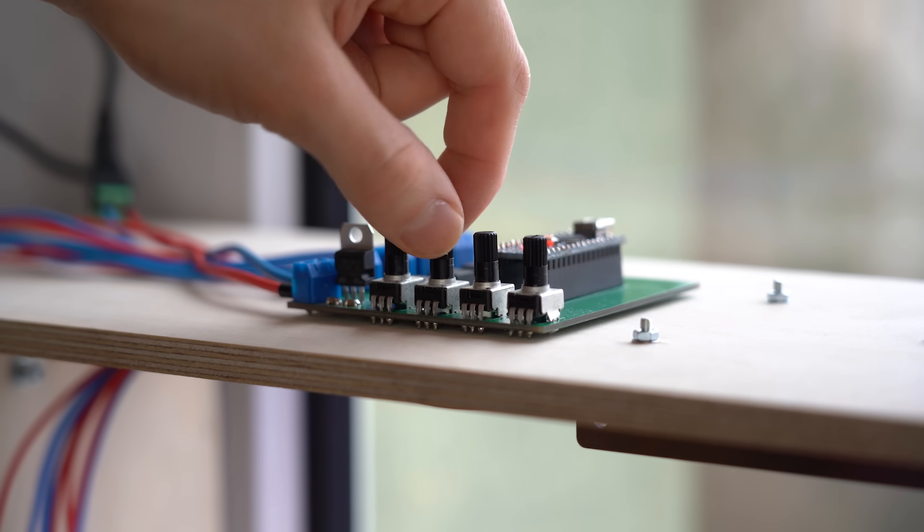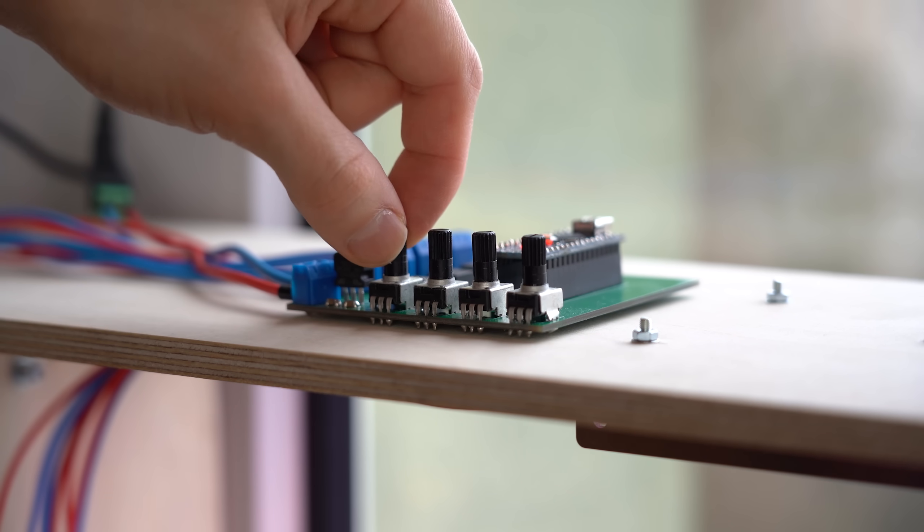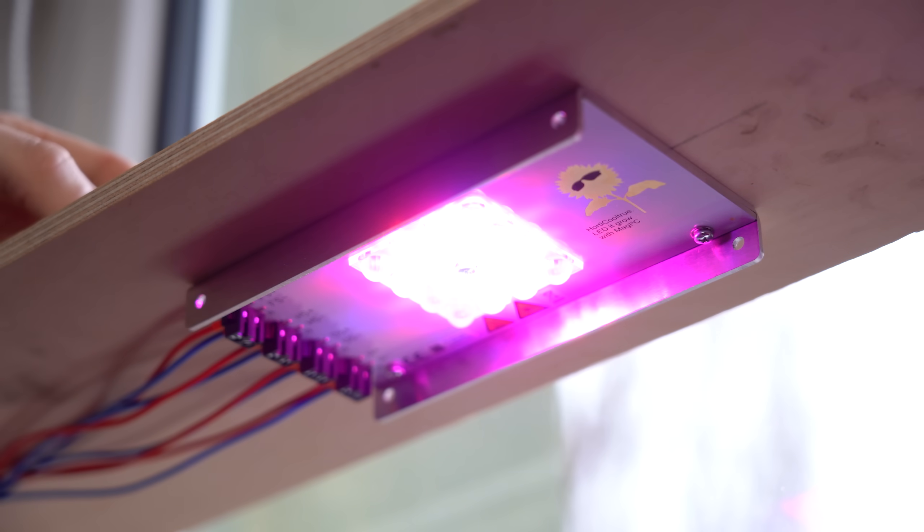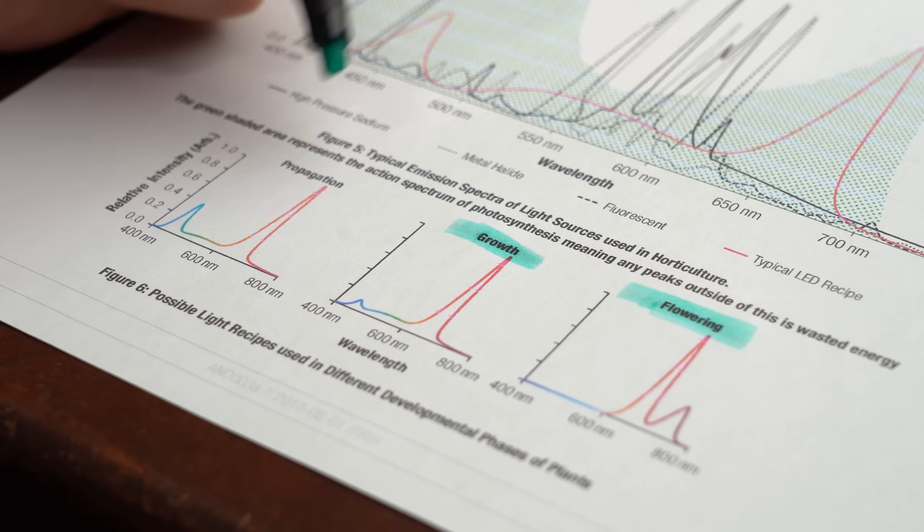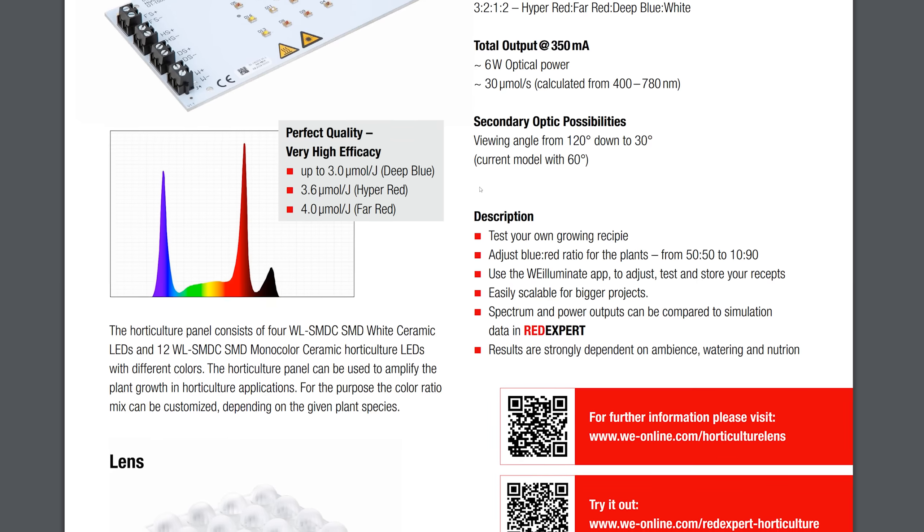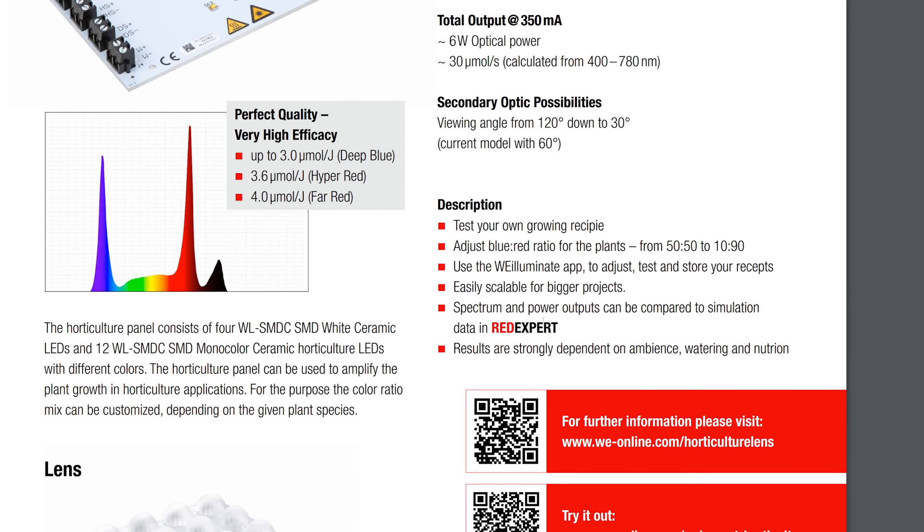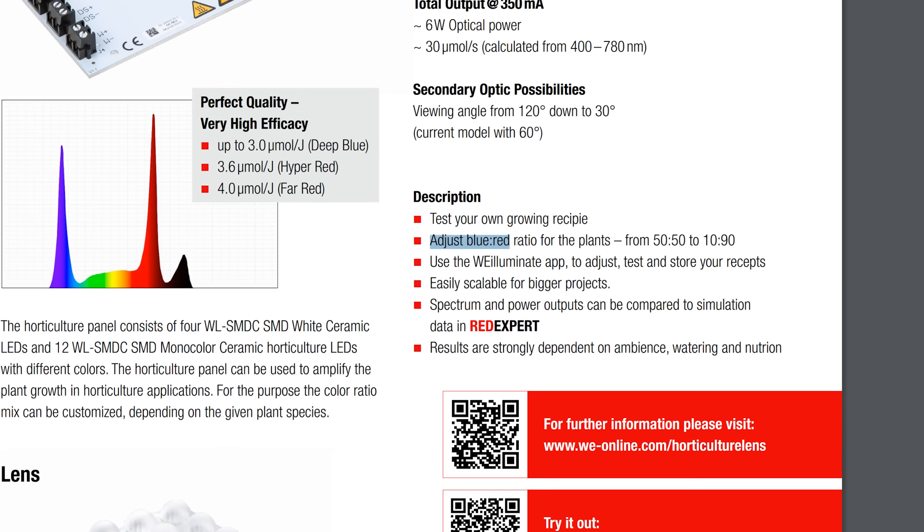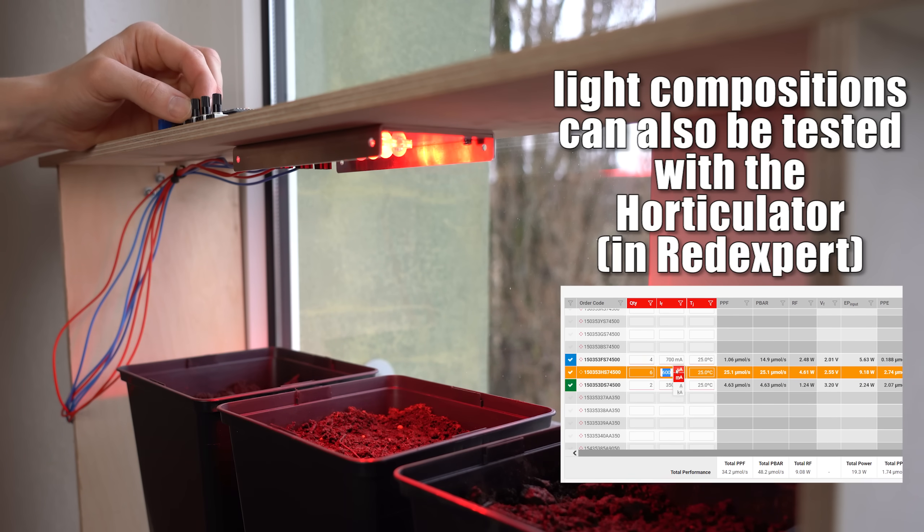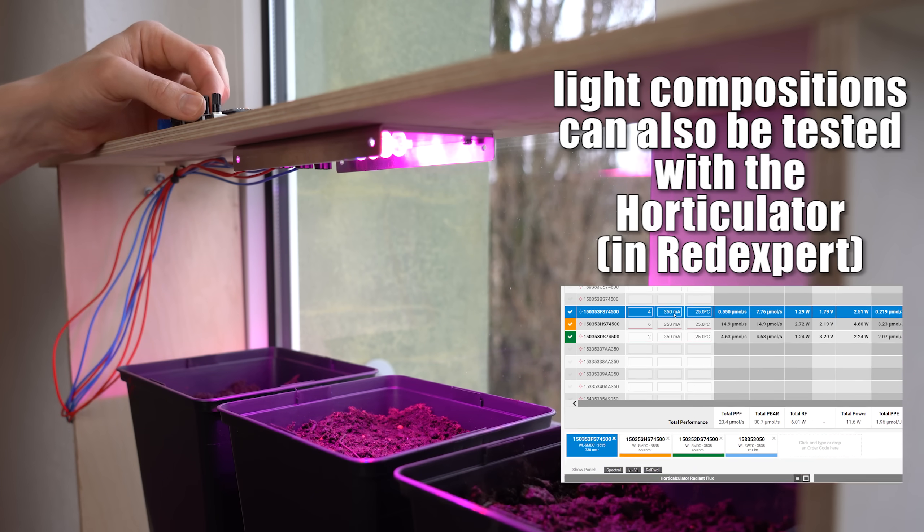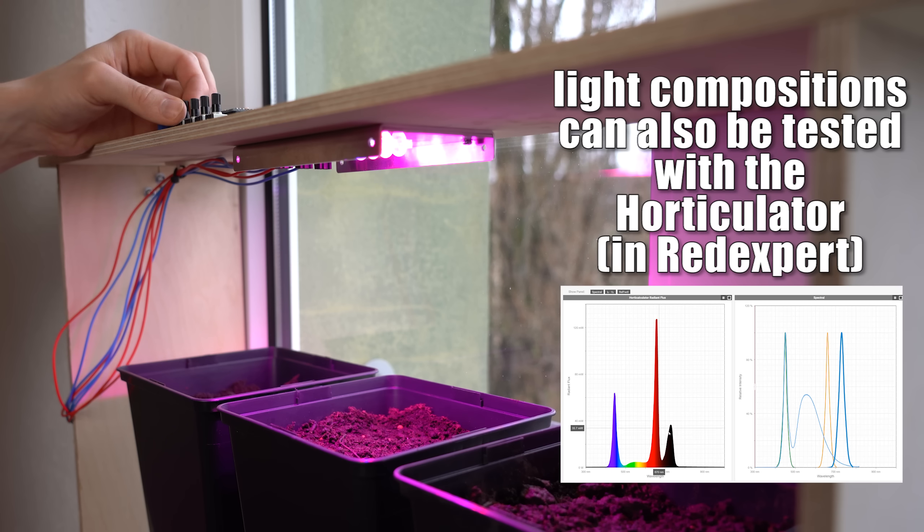But here comes the question how the individual light channels should be mixed together and let me tell you that there is no universal answer to that because every plant comes with other light tendencies and thus an individual fine adjustment is kind of necessary. It is also noteworthy that during different development stages the plant requires different wavelengths but since we are only doing a simplified experiment here and because the manual recommends a blue-red mixing ratio between 50-50 and 90-10 I made my life easy and went with the middle value and adjusted the remaining LEDs to get a nice to look at end result.